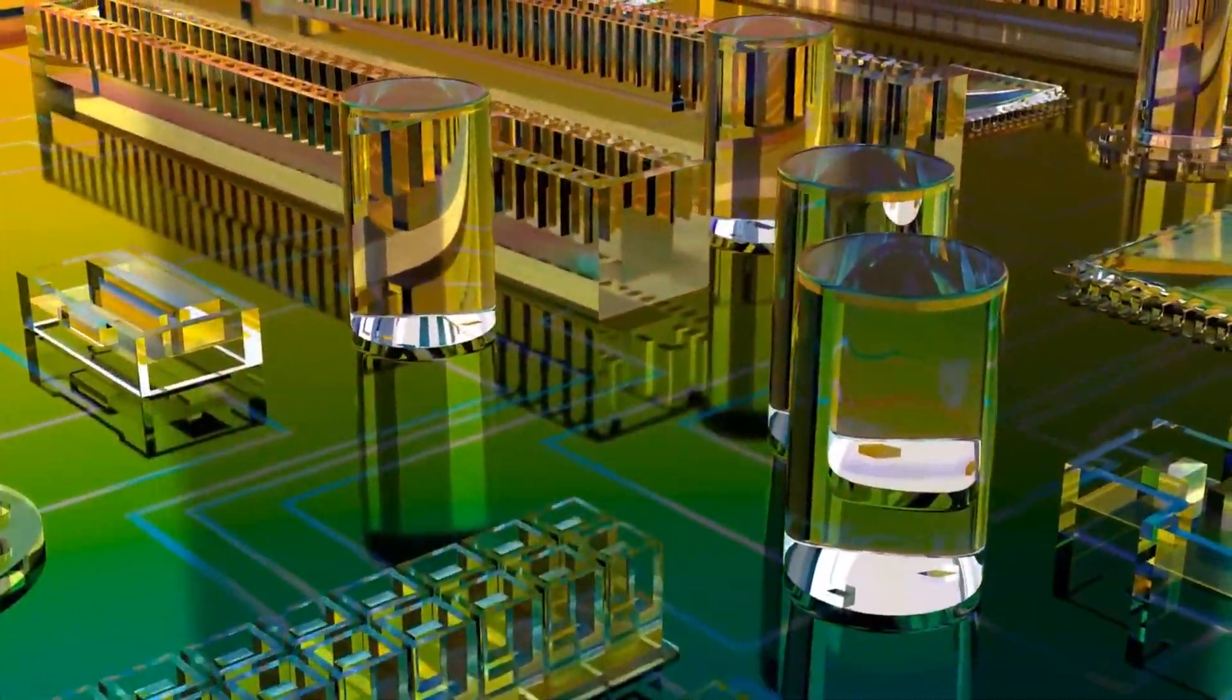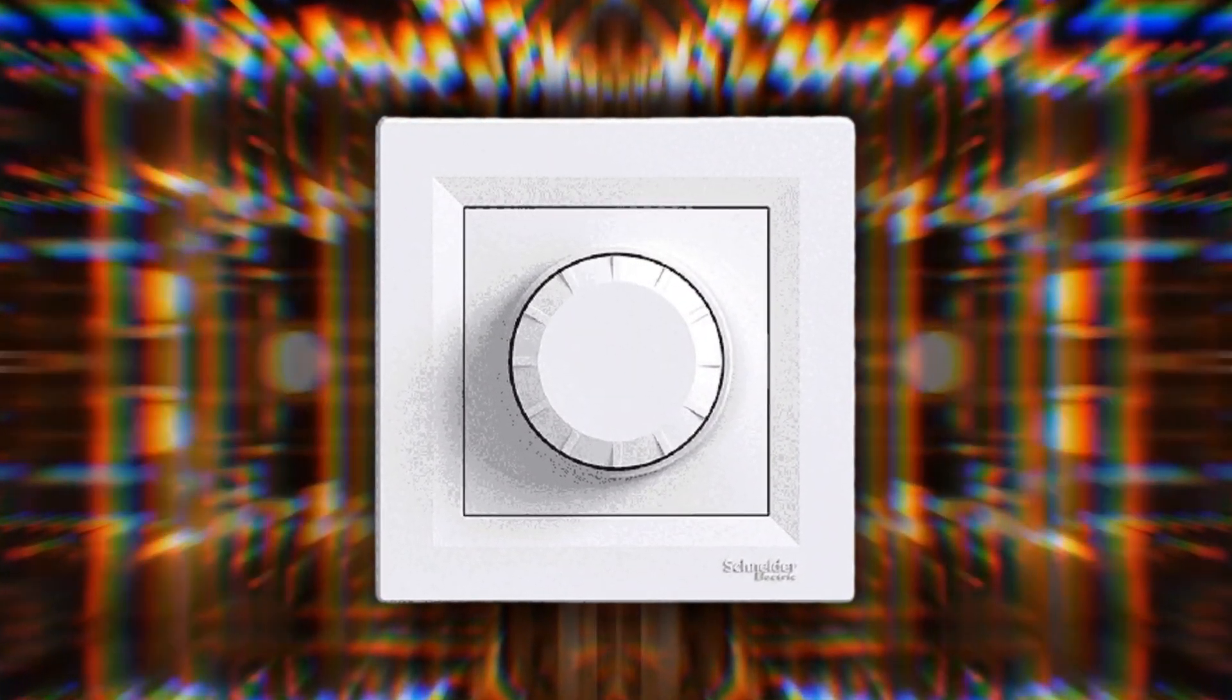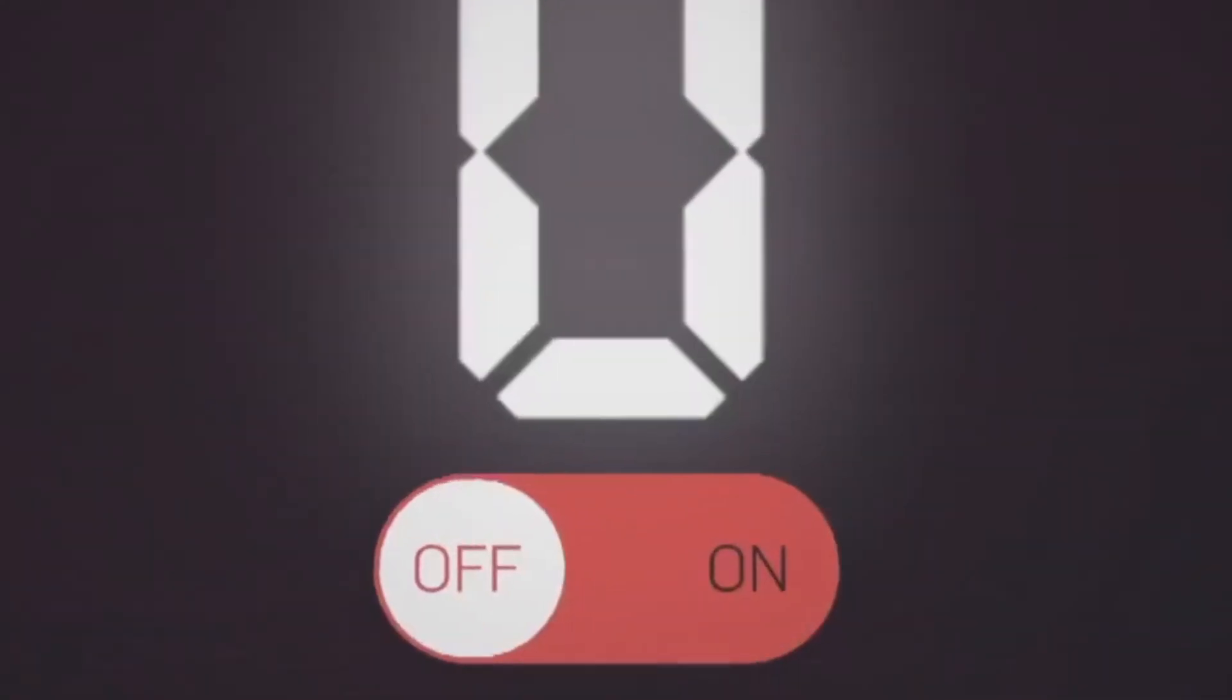Quantum computers, on the other hand, use qubits. A qubit is like a dimmer switch instead of a light switch. It can be off, zero, on, one, or anywhere in between.